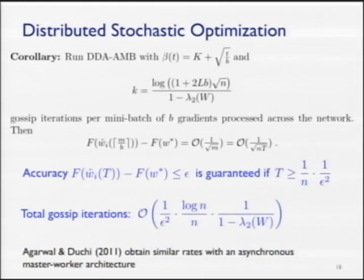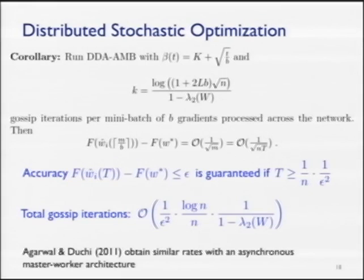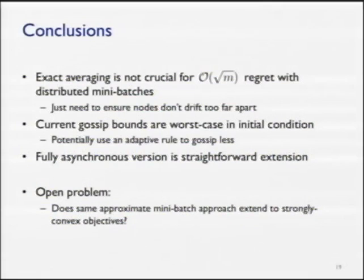A related result by Agarwal and Duchi achieves similar scaling but in a master-worker architecture, where errors arise from workers computing local mini-batch gradients using outdated information — a different setup requiring different analysis, but the most related result in the literature.